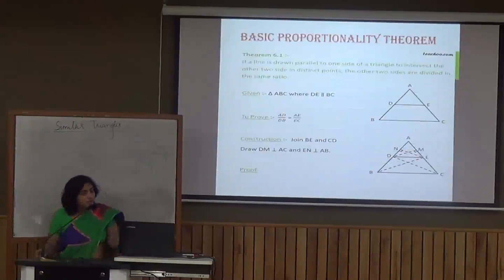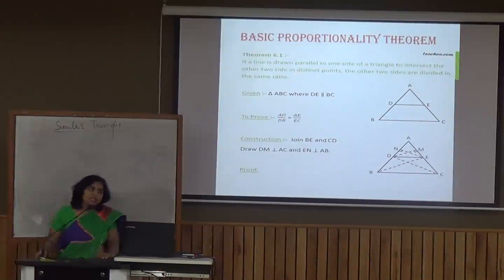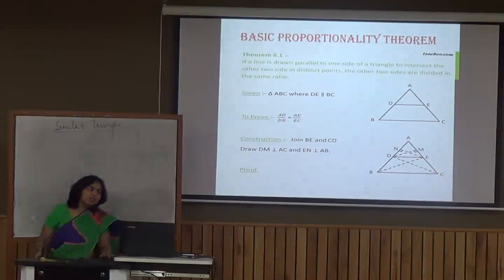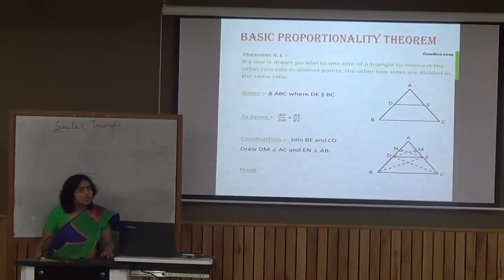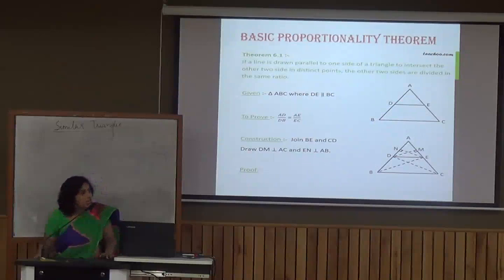Before that, let's move to one theorem — the Basic Proportionality Theorem, which is also known as Thales' Theorem, as it was given by Thales. It states that if a line is drawn parallel to one side of a triangle to intersect the other two sides at distinct points, then the other two sides are divided in the same ratio.